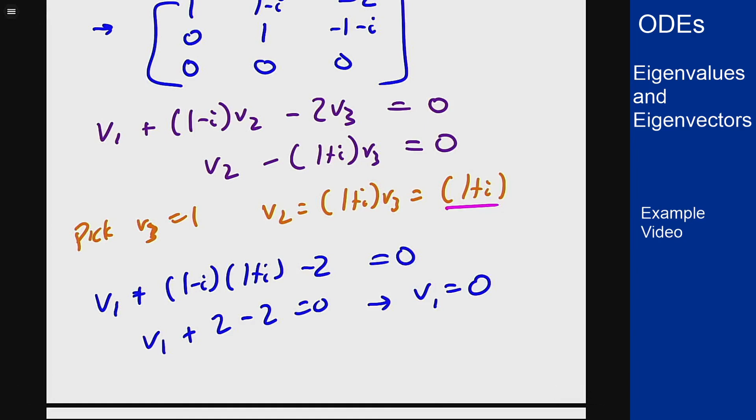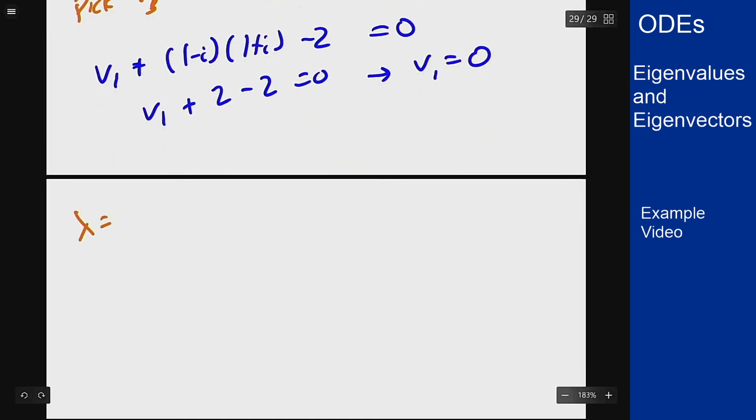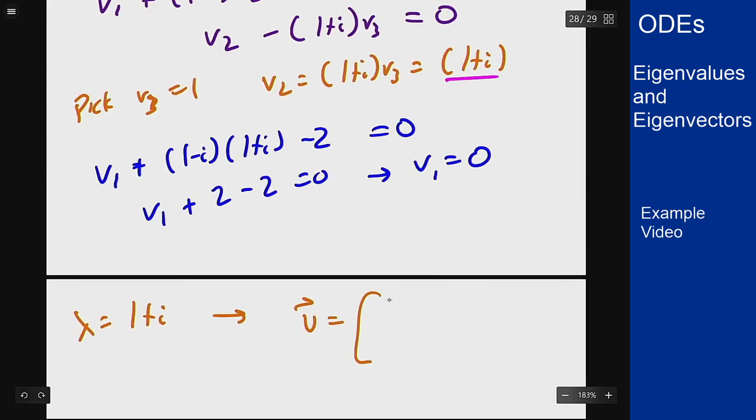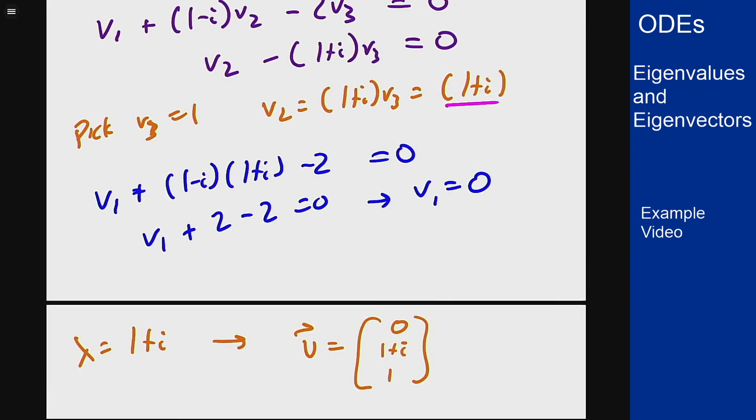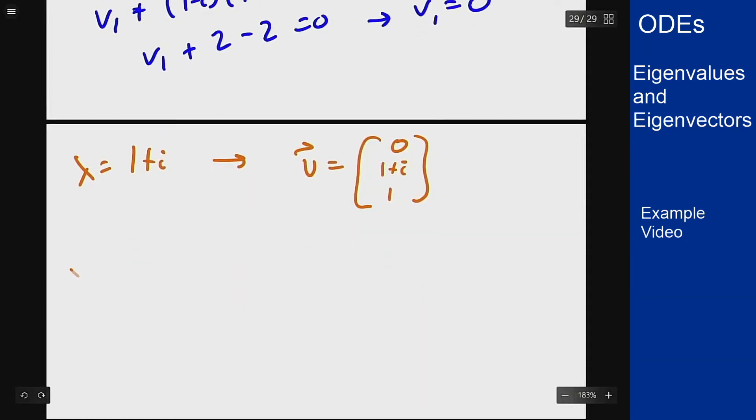So in summary, for eigenvalue 1 plus i we got eigenvector: 0, 1 plus i, and 1. And then we know that by complex conjugates, the conjugate eigenvalue must have a conjugate eigenvector. We then know that if lambda is 1 minus i, the vector that I get is 0, 1 minus i, and 1.